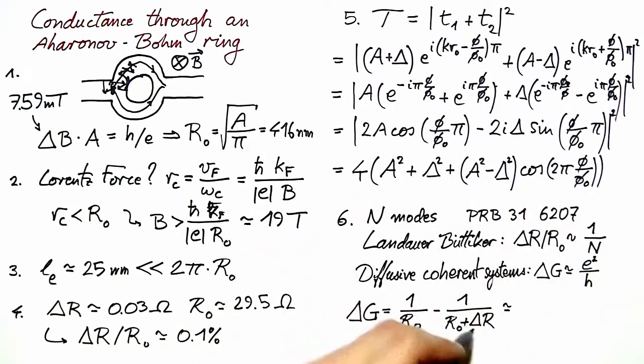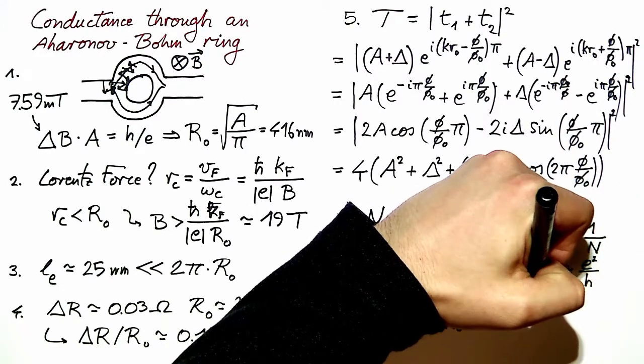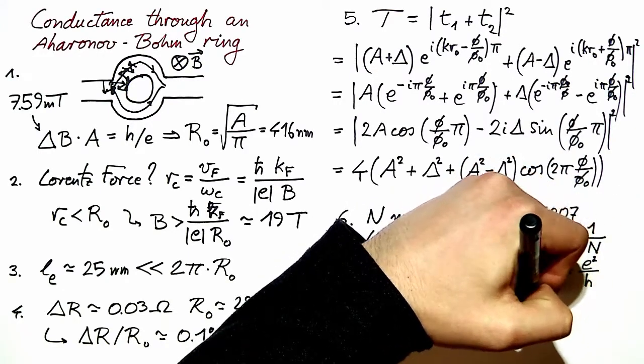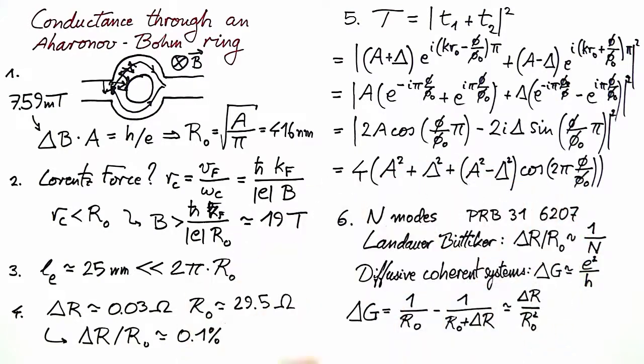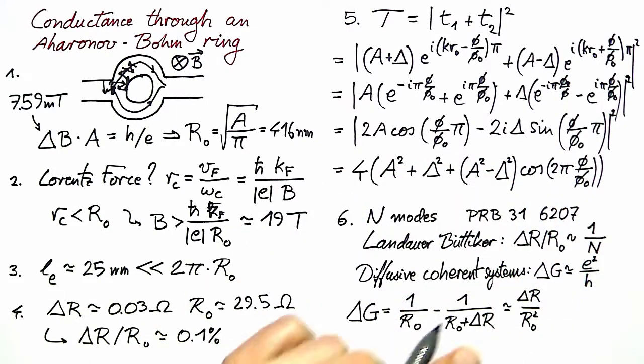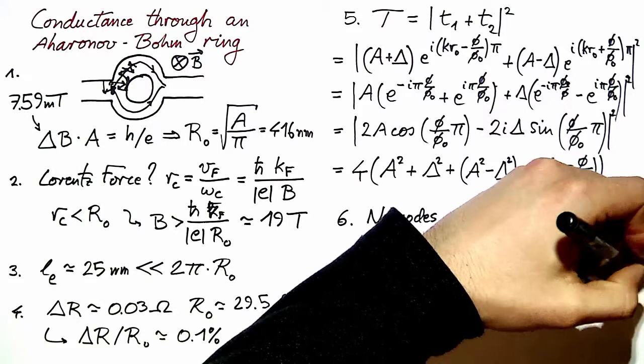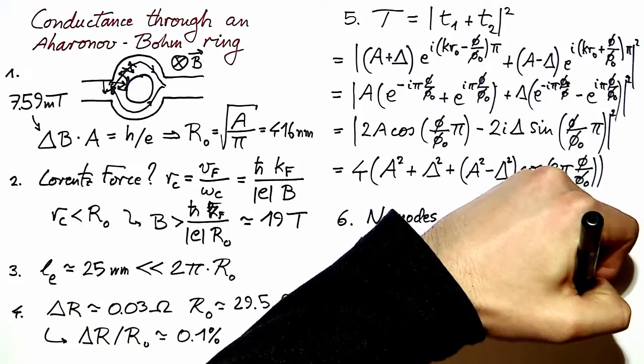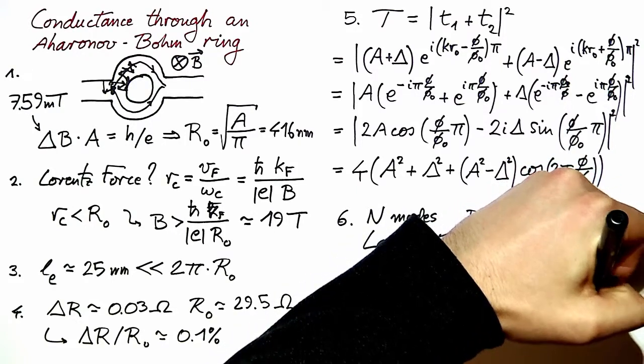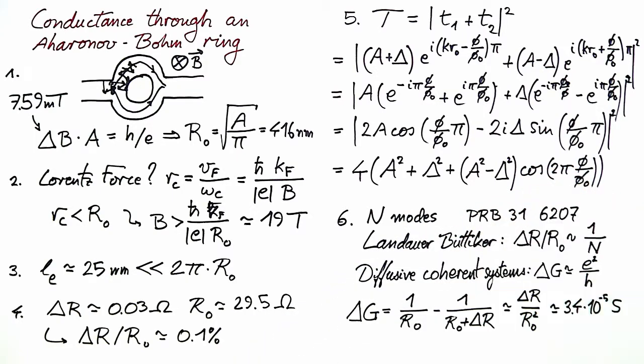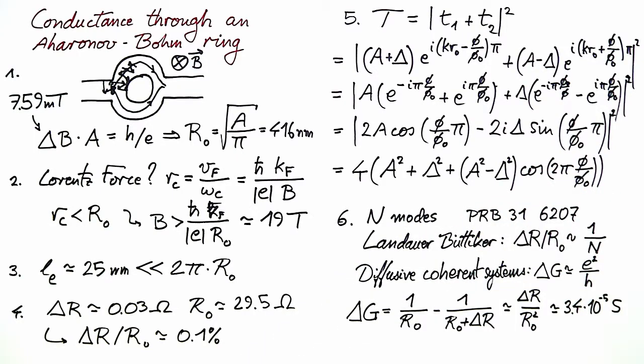For small values of ΔR, this can be simplified to ΔR over R₀². Plugging in the numbers, we find a value of 3.4 times 10⁻⁵ siemens, which is the inverse of an ohm, and this is of the order of e² over h if you plug in the numbers.